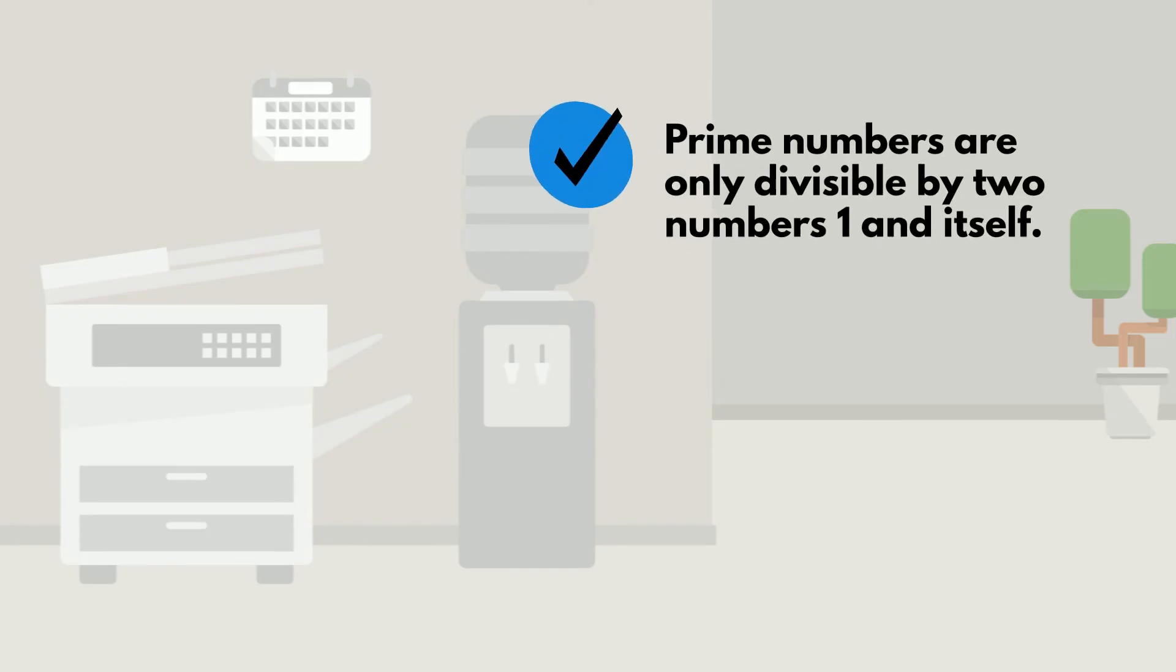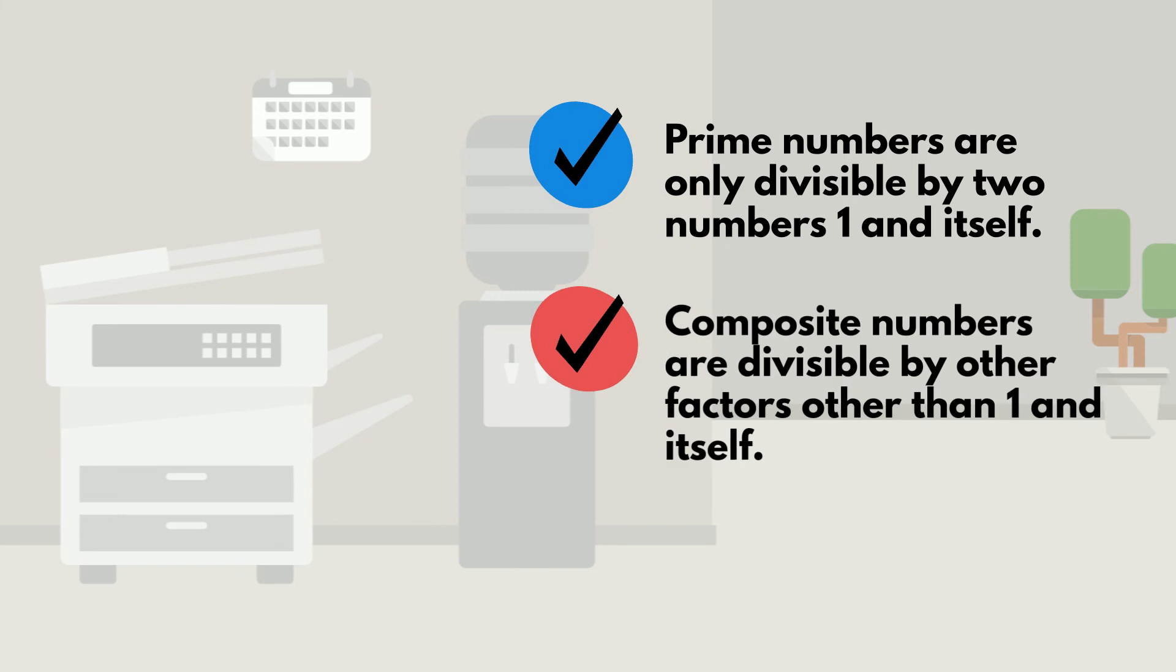prime numbers are only divisible by two numbers, 1 and itself. Composite numbers are divisible by other factors other than 1 and itself.